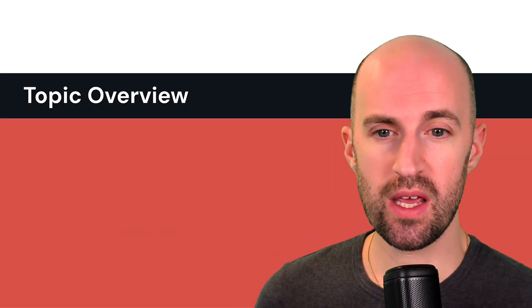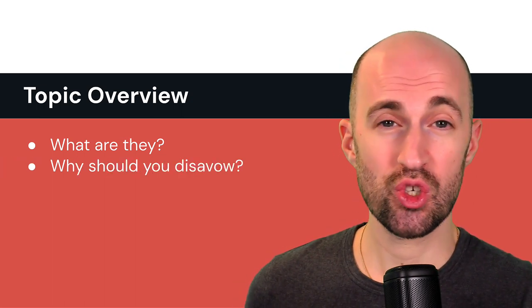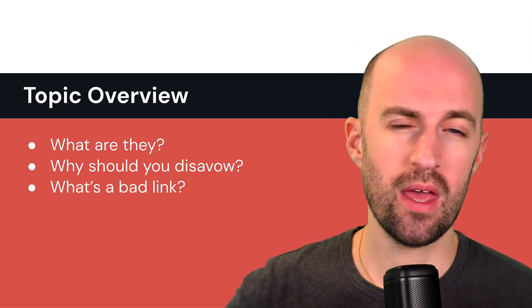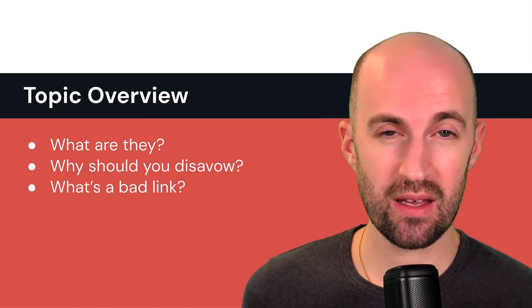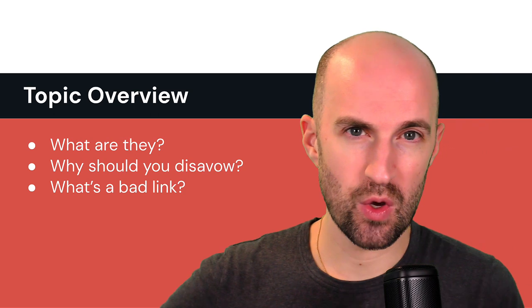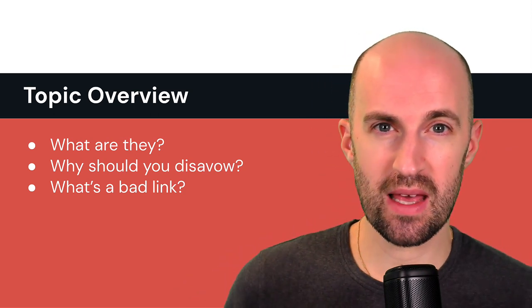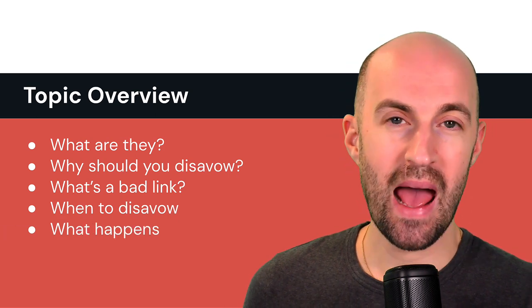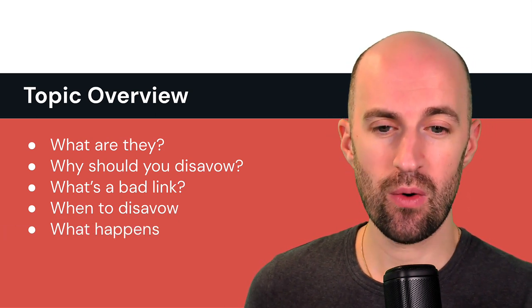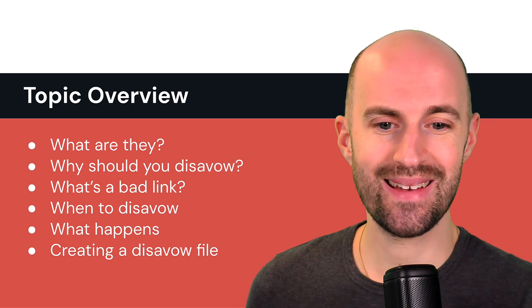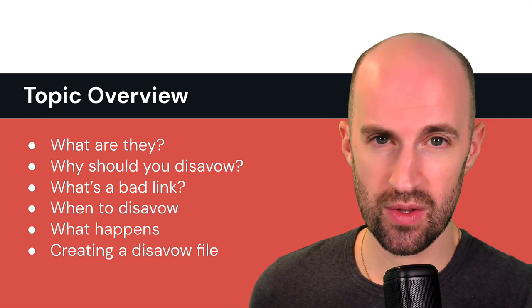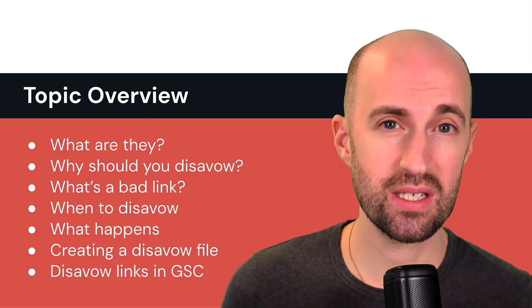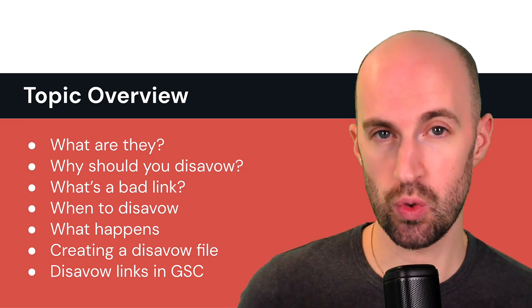What you'll learn in this video is: what is link disavowing and how do you actually do that; why should you disavow links; what is a bad backlink and the gray zone around that; when to actually disavow a link and what happens when you do; creating a disavow file and how to do that; and finally, how to disavow these links in Google Search Console.